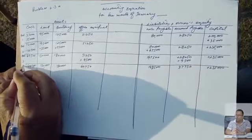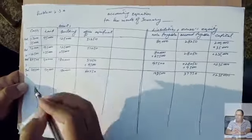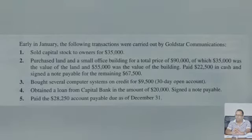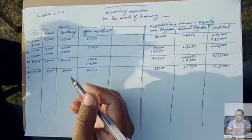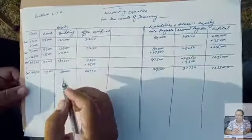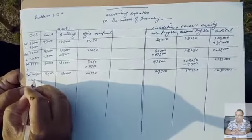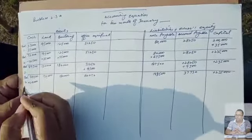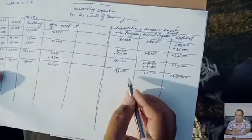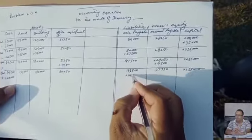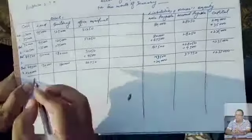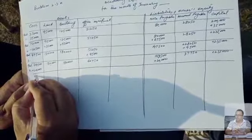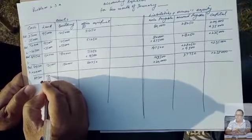The next transaction, number 4: Obtain a loan from Capital Bank in the amount of $20,000; signed a note. So cash will be added by $20,000 on the asset side. And because you have signed a loan — because you will return it — Note Payable will be added by $20,000 on the liability side.